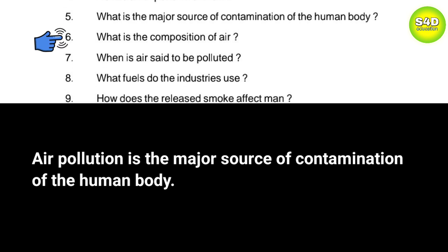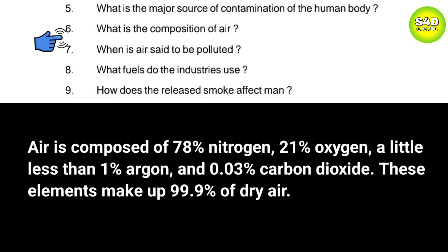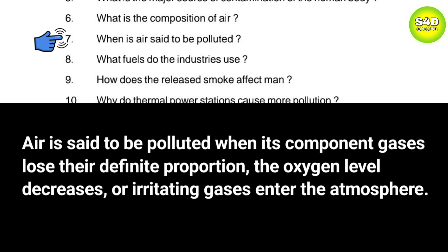Question 6: What is the composition of air? Answer: Air is composed of 78% nitrogen, 21% oxygen, a little less than 1% argon, and 0.03% carbon dioxide. These elements make up 99.9% of dry air. Question 7: When is air said to be polluted? Answer: Air is said to be polluted when its component gases lose their definite proportion, the oxygen level decreases, or irritating gases enter the atmosphere.